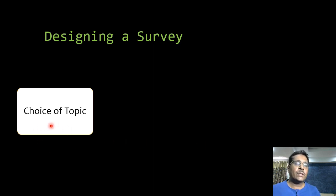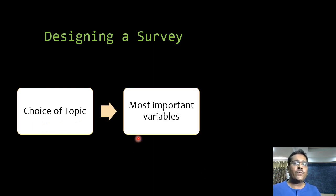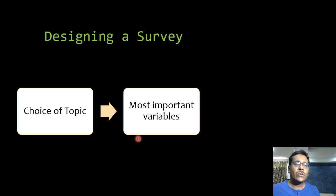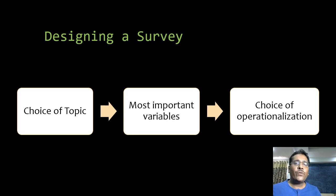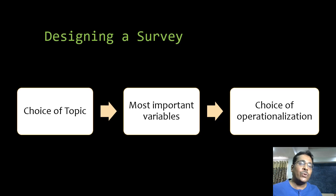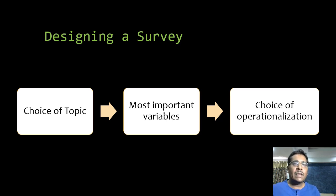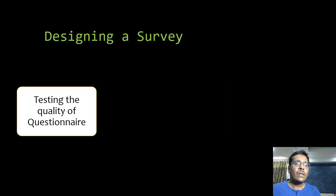Designing a survey includes first the choice of topic, then identifying the most important variables, which helps us know what questions to ask. There is also the choice of operationalization — for example, if we are trying to measure attitude, how do we operationalize it in terms of questions? Do we ask whether they like a particular program, or how much they agree with a particular statement?